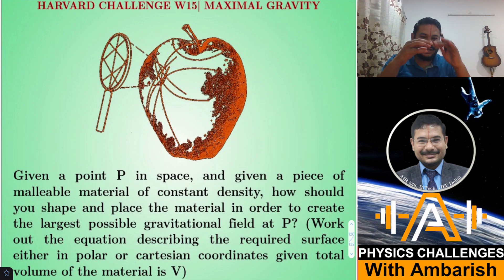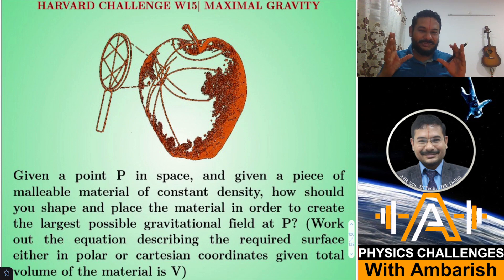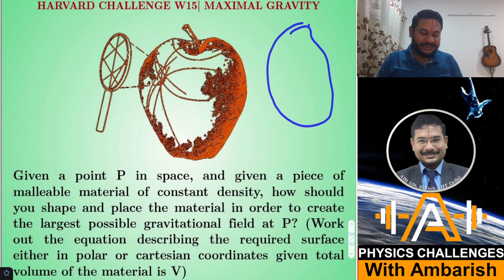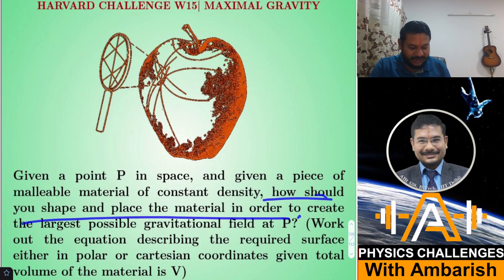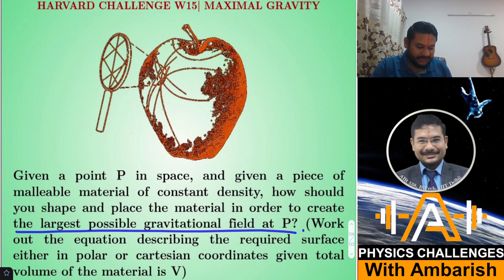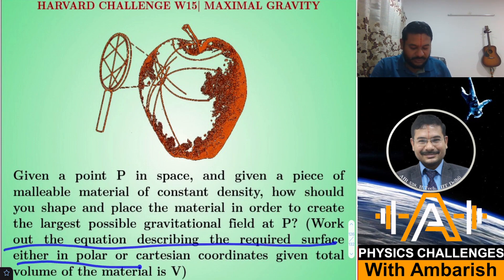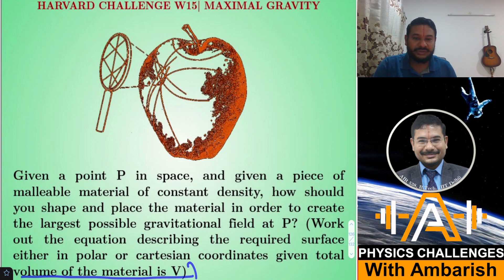For example, suppose you have a dough ball. You can shape that dough in any shape you want, but the density has to remain constant. We want to shape our dough ball in such a way that we maximize the gravitational field at some point P. We need to find that shape. Work out the equation describing the required surface in polar or Cartesian coordinates, given that the total volume of the material is V.